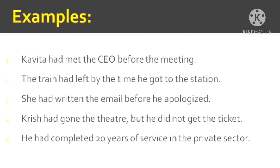In past perfect tense, whatever the form of the subject, 'had' is always used — unlike present perfect where you choose between 'have' and 'has'. 'Meet — met — met': meet is the base form, met is V2 past form, and when used after have/has/had, met is the past participle V3. So 'Kavita had met the CEO before the meeting' clearly expresses two past events with Kavita meeting the CEO first.